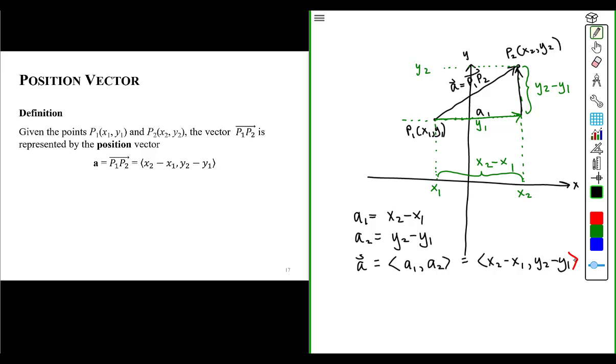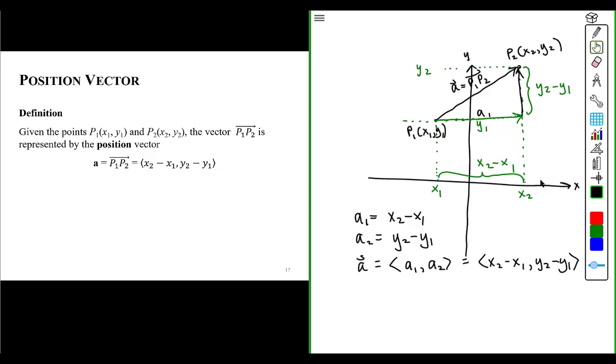Now the interesting thing is, those two components are the same components of the position vector that represents the vector between the points P1 and P2. So let's illustrate the position vector from these values. So let's take the two components that we just drew. Let's take the A1 component, and let's look at the A2 component as well.